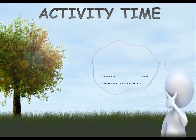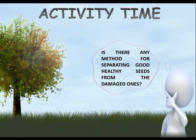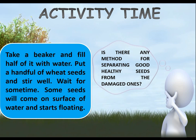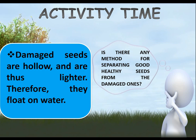Activity time: is there any method for separating good healthy seeds from the damaged ones? Take a beaker and fill half of it with water. Put a handful of wheat seeds and stir well. Wait for some time — some seeds will come to the surface of the water and start floating. Damaged seeds are hollow and are thus lighter, therefore they float on water.